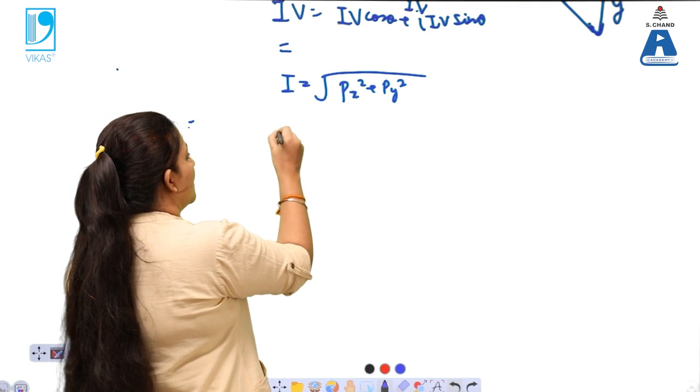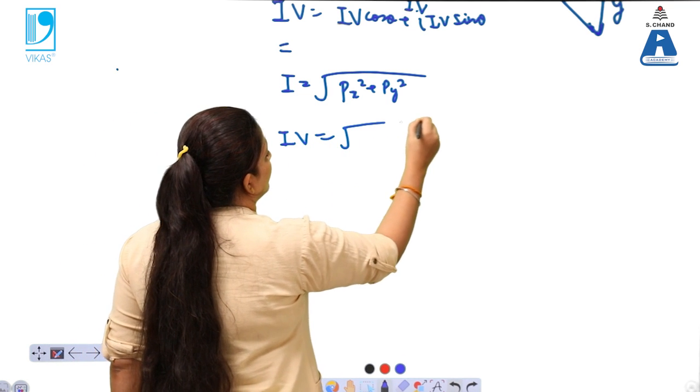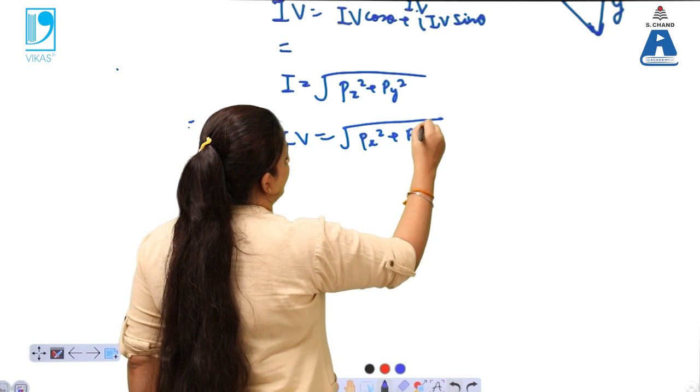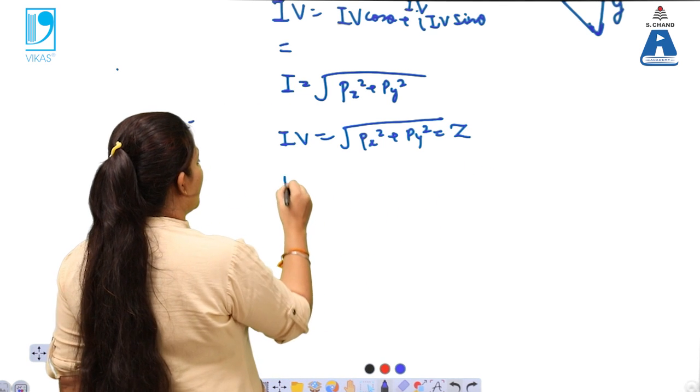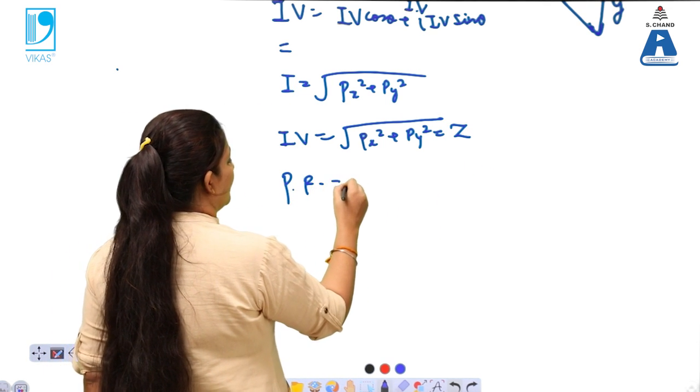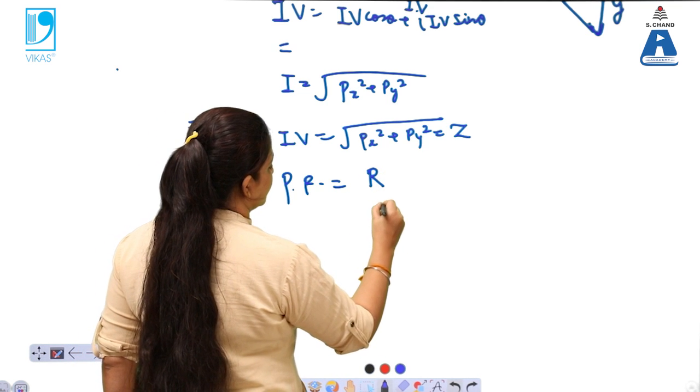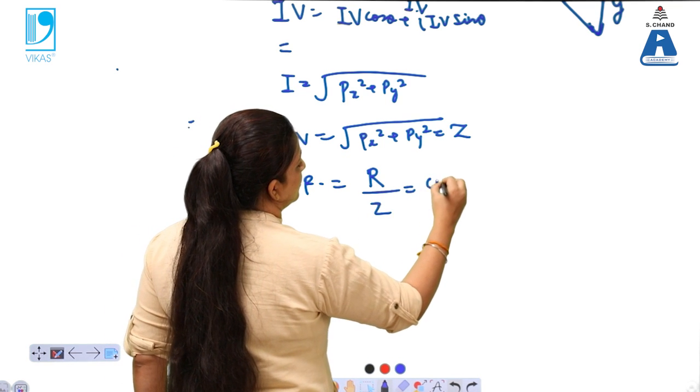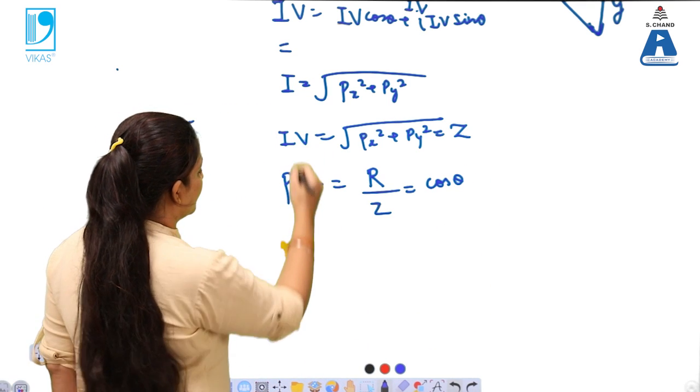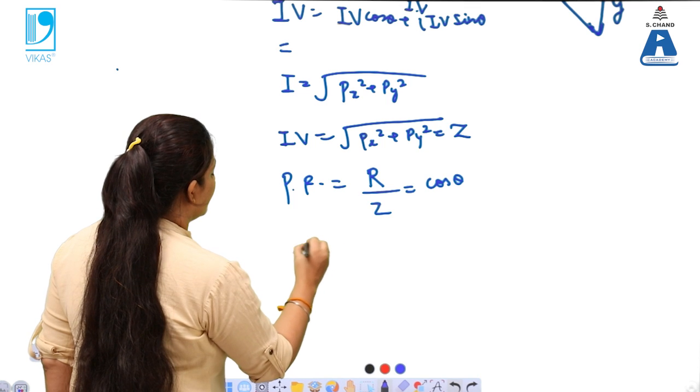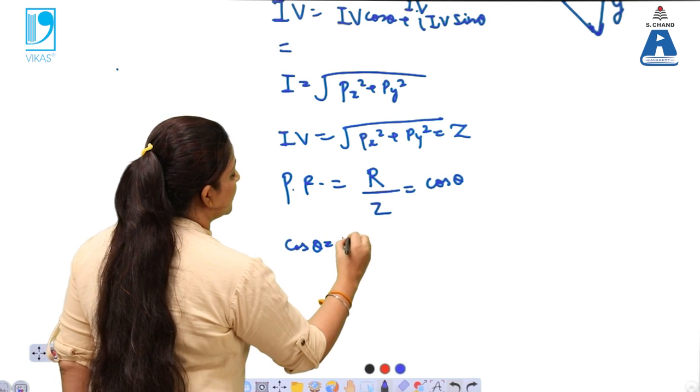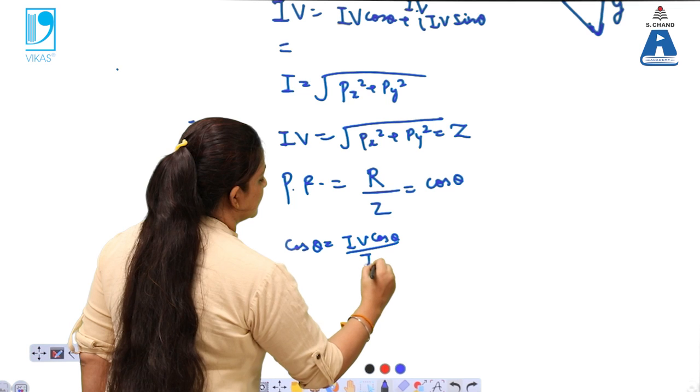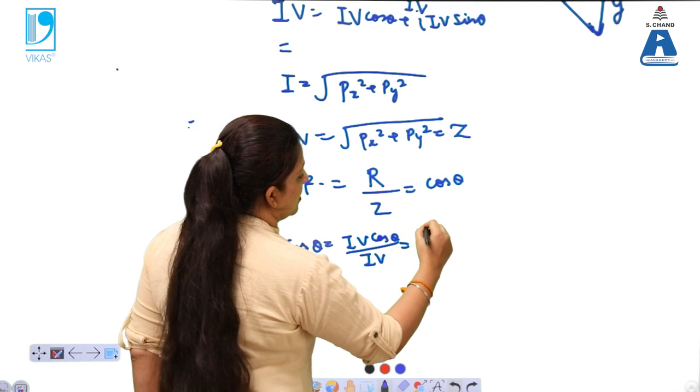So our IV is equals to Px squared plus Py squared. If this resultant is equals to Z, then the power factor is equals to R by Z, which is equals to cos theta. Clearly when we are calculating cos theta, X component that is IV cos theta divided by hypotenuse IV, that equals R by Z.